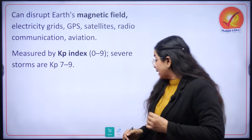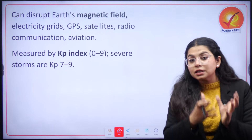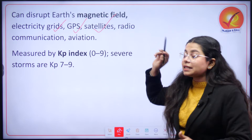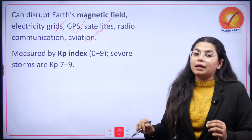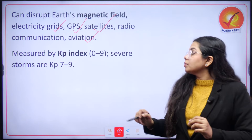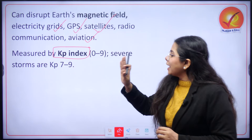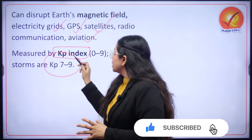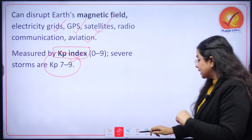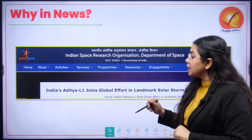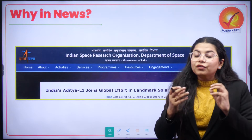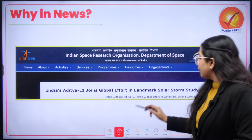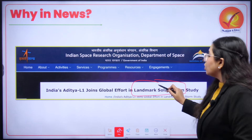Solar storms can go ahead and actually not just disturb Earth's magnetic field, but also impact electricity grids, GPS satellites, radio communication, and aviation. Solar storms are measured using the KP index — a severe storm on the index will be around KP 7 to 9. Recently, this has been in news because India's Aditya L1, our first solar mission, has joined the global effort in a landmark solar storm study.